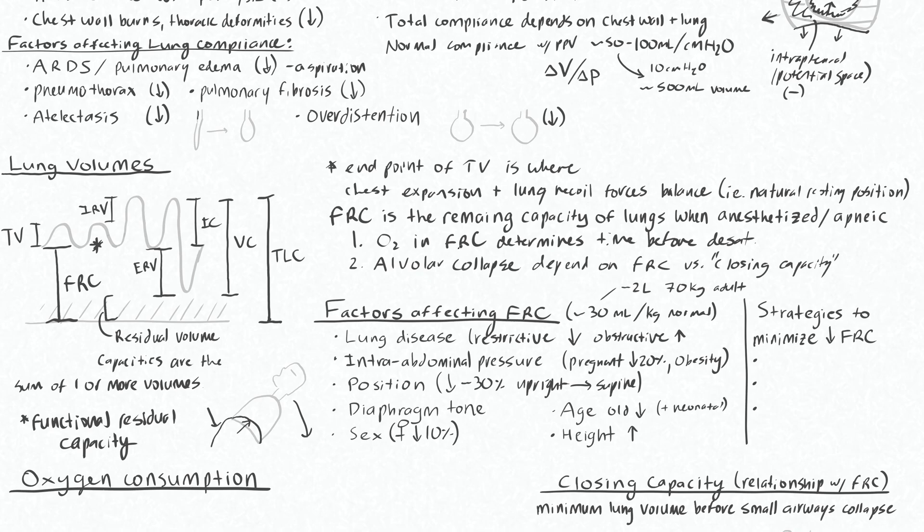Basically, we know that having a decent FRC is good because we want a decent reserve of oxygen in our lungs. And we want to prevent alveolar collapse. And we have all these factors working against us during the induction of anesthesia, like losing our diaphragm tone, changing our position, the intra-abdominal pressure situation.